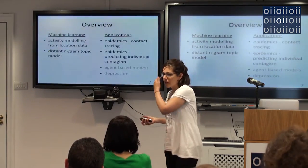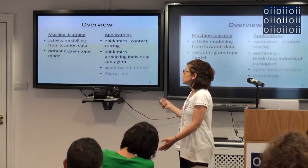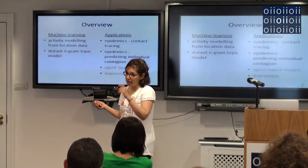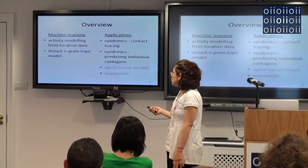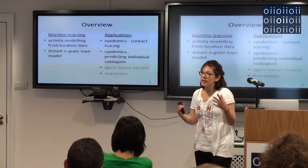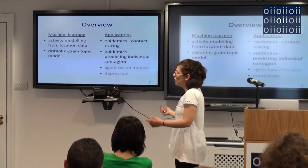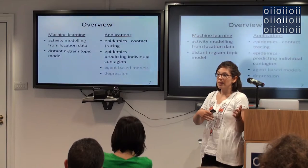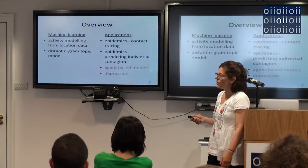My research generally falls under two different categories: mobile phone data and machine learning — applying different types of models for modeling this data. I'm going to present a model for activity modeling, basically for discovering routines from mobile phone data. Another branch of my work looks at different applications — how can mobile phone data be used for applications useful to humans? One application I'll talk about today is epidemics: simulating epidemics over mobile phone Bluetooth interaction data. I've also looked at agent-based models and depression, but I won't present those results.